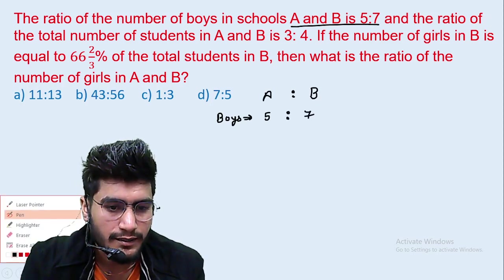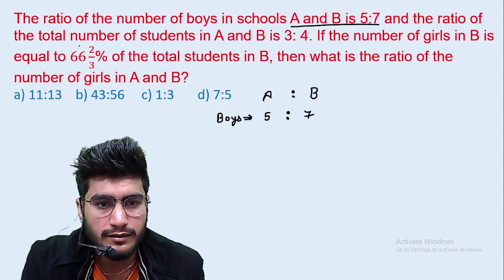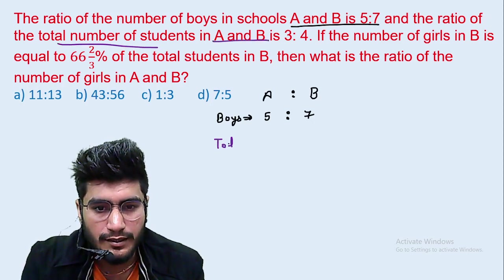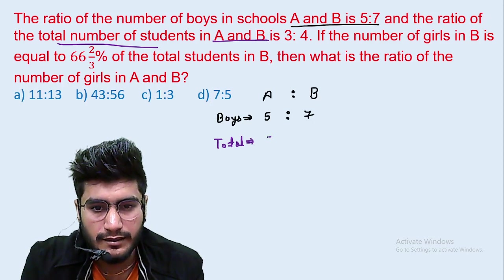Okay. What do we say? The ratio of the total number of students in A and B, total number of students ratio is also given. How much? 3 ratio 4.